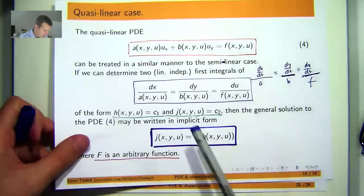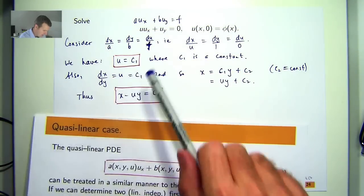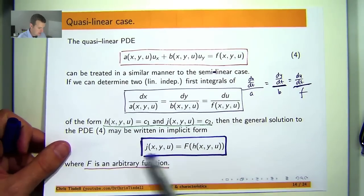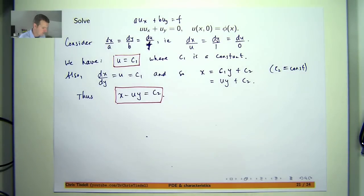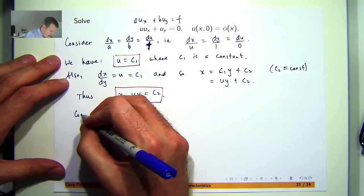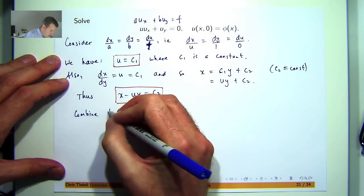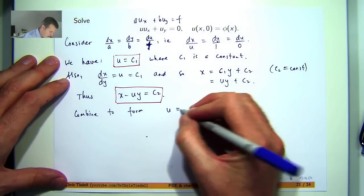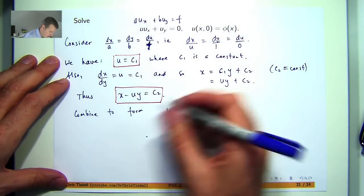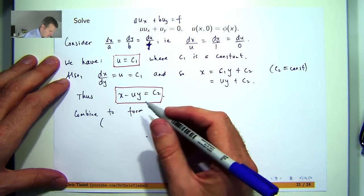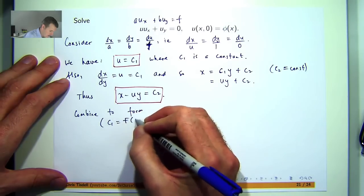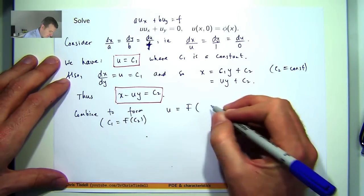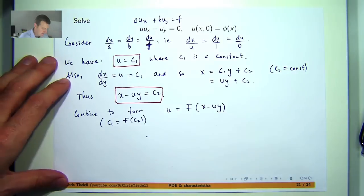So if I take this to the other side I will get the following. So now essentially one of these would be our h and one of these would be our g. Let's just combine them through some arbitrary but differentiable function. So combine to form the following. Say c1 equals f of c2 say, and we get this.